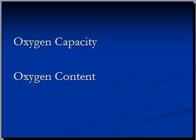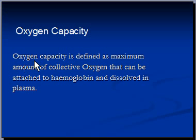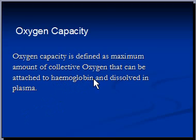Oxygen capacity first. Oxygen capacity is defined as the maximum amount of oxygen that can be carried by blood, either attached to hemoglobin or dissolved in plasma. We know that most of the oxygen is carried in blood attached to hemoglobin and is known as oxyhemoglobin, but some oxygen can also be dissolved in plasma.